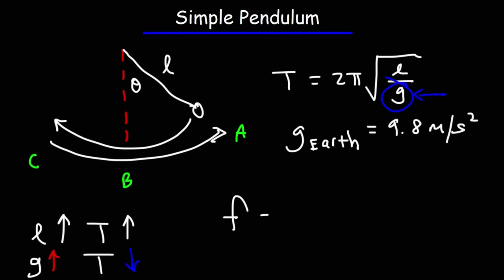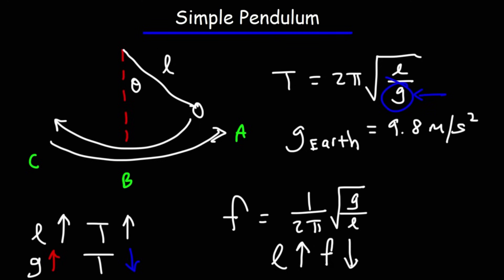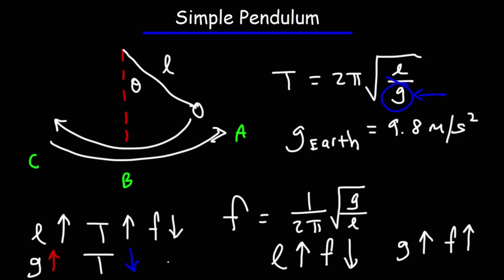To calculate the frequency, use this formula: frequency equals 1 over 2π times the square root of G over L. Since L is in the denominator here, increasing L decreases the frequency — the number of complete swings per second is inversely related to the pendulum's length. Increasing gravitational acceleration increases the frequency. So frequency and period are inversely related: if the period goes up, frequency goes down, and vice versa.